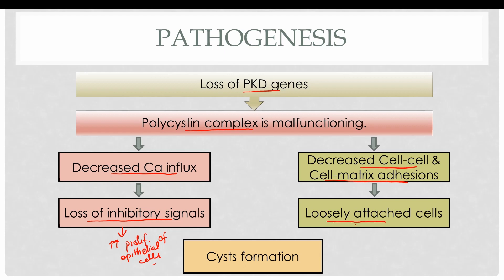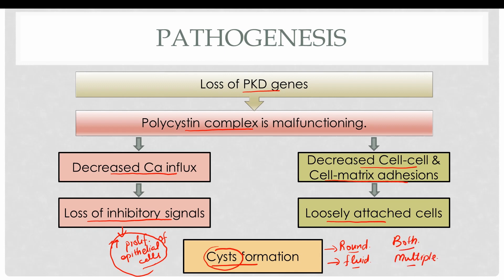This loose attachment of cells and increased proliferation of epithelial cells results in the formation of cysts. These cysts are typically round and filled with fluid, present in both kidneys since this is a genetic disease, and they are multiple. The cysts are typically formed from the tubular epithelium.